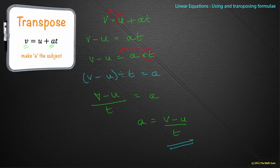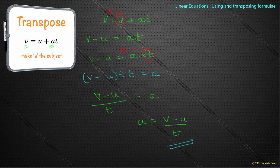A is on its own now. Transpose just means move things around - get it on its own, change the sign, and do the kissy kissy and all the rest of it. Do that with letters rather than just numbers.